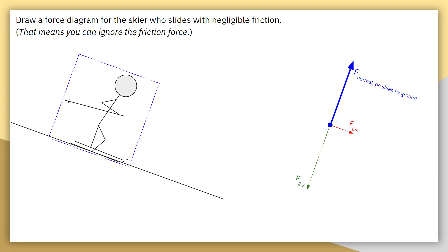I can remove the original force of gravity vector since we have now explained its effects through its components. Our summation equation along the x-axis is simply force gravity-x. There is no force balancing out force gravity-x, which means the system is accelerating along the x-axis — exactly what we would expect to see for a skier moving down a frictionless hill.